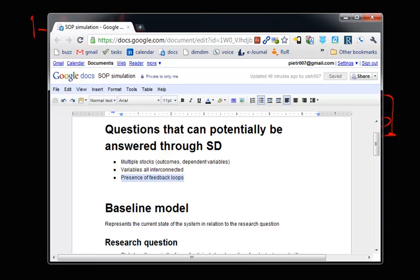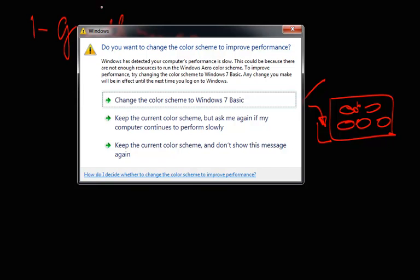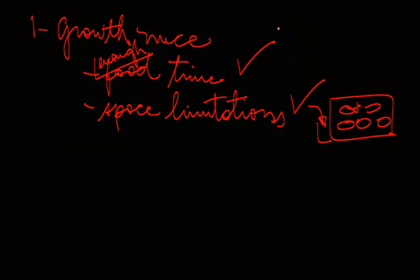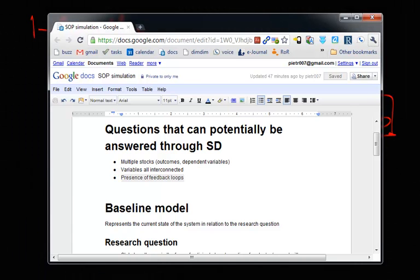And the third requirement, which is the presence of feedback loops, is also met. Because basically, let me just do some drawing here. Why does it keep masking? Basically, if you have mice here, and mice are going up, later they can reproduce and increase the number of mice. So basically, that's the idea. So, based on this protocol, this is actually true. It meets at least two types of requirements. The variables are interconnected, and there are feedback loops.